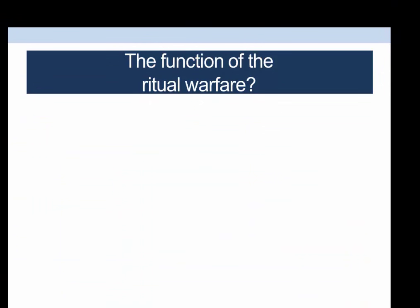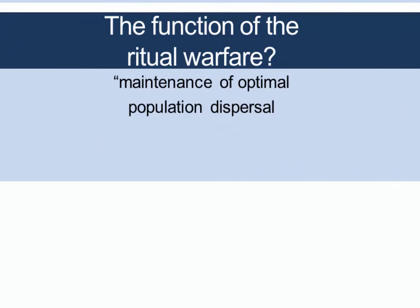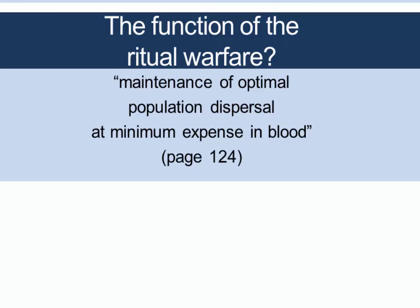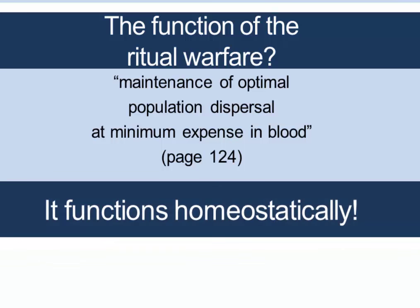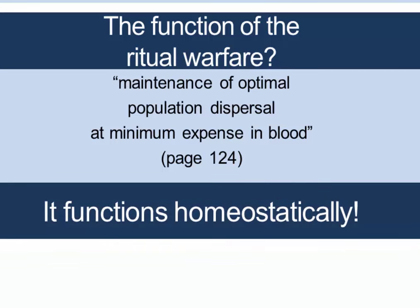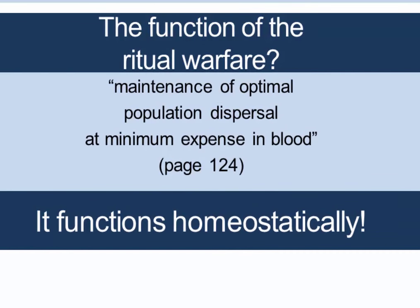To summarize: what was the function of ritual warfare? To quote Rappaport, it was the maintenance of optimal population dispersal at a minimum expense in blood. He argued that the Maring were not trying to destroy their neighbors, but rather that the way these rituals worked was to minimize blood loss while renegotiating boundaries. In this sense, warfare worked to restore balance and homeostasis in the local population systems — both of pigs and of humans.